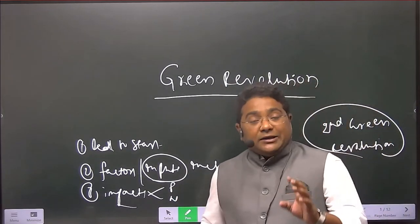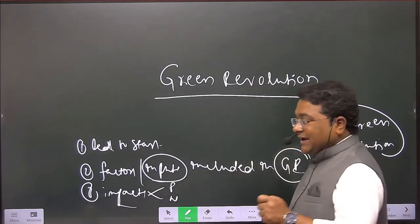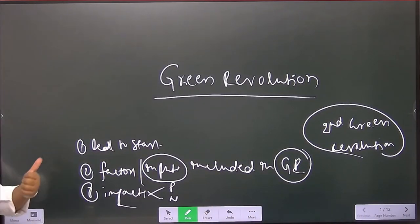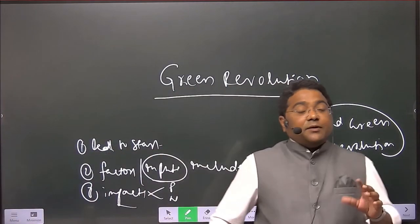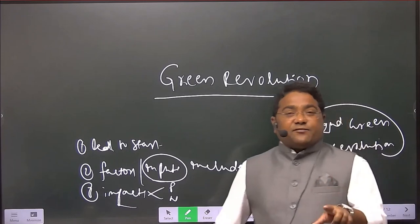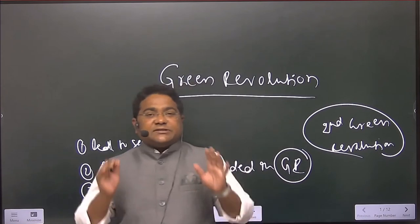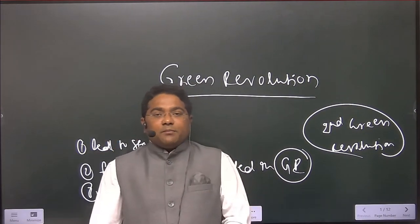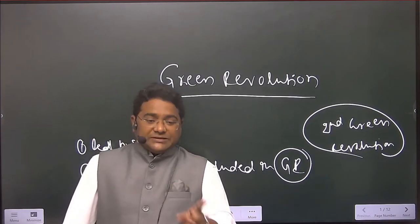The second green revolution is very important — it started in 2004 but is yet to come fully. What inputs are involved in the second green revolution? Is it necessary to start it, given we already have the first green revolution's positive and negative outcomes? We became self-sufficient or self-reliant, and you must understand the difference between self-sufficient and self-reliant, because one question in the mains was based on this.